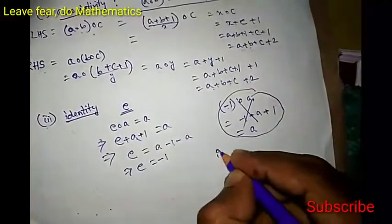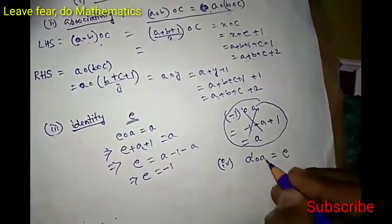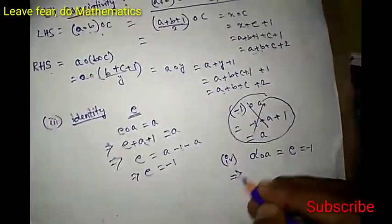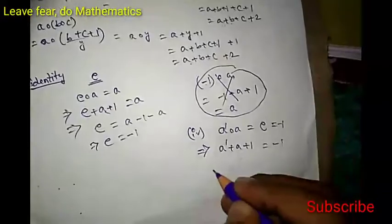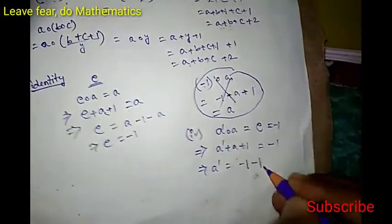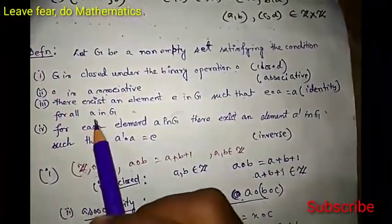Now we check for inverse. We need A' ∘ A equals E, where E equals minus 1. By definition, A' ∘ A equals A' plus A plus 1, which equals minus 1. Solving: A' equals minus 1 minus 1 minus A, so A' equals minus 2 minus A. This system has an inverse. Since all four conditions are satisfied, this system is indeed a group.